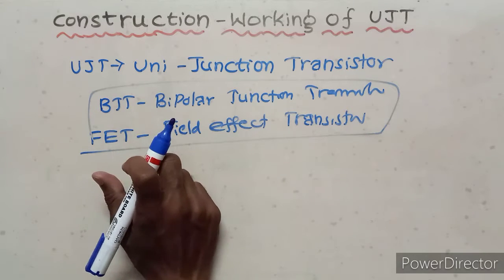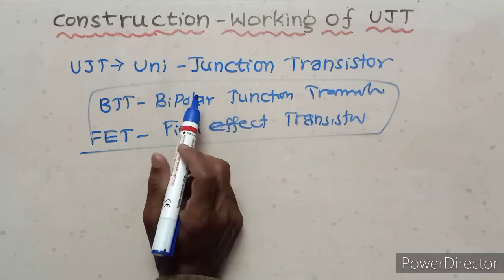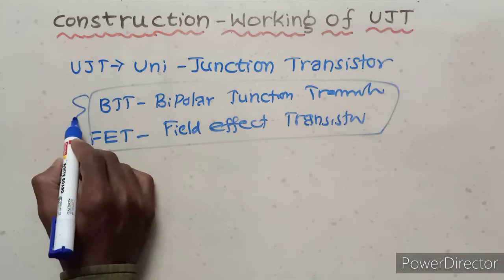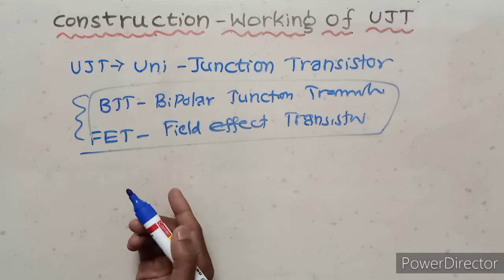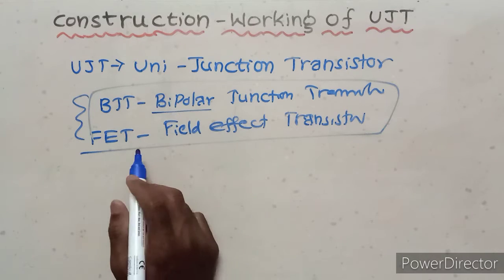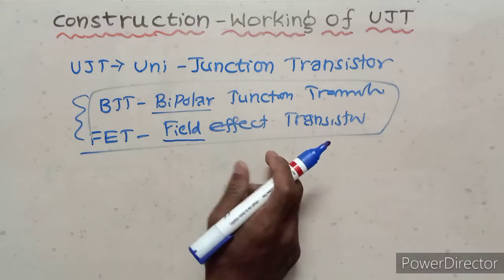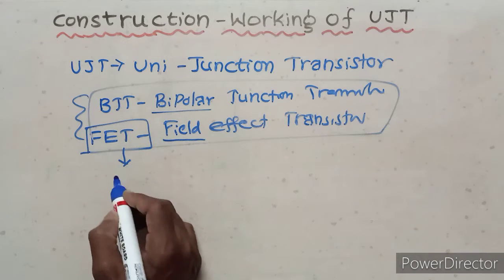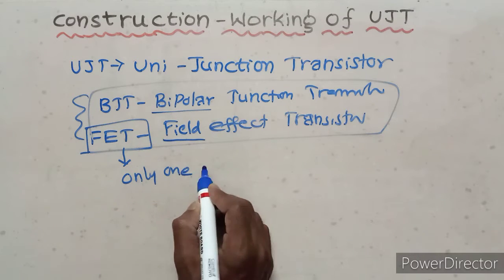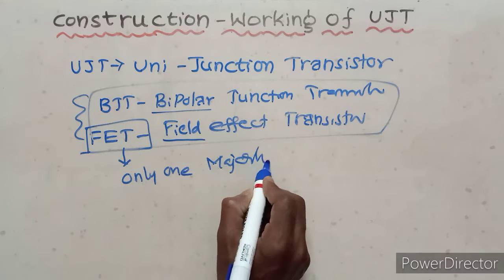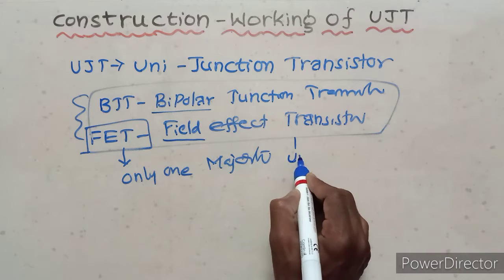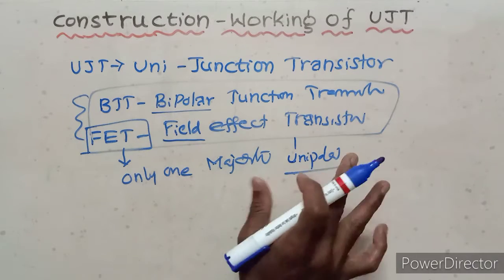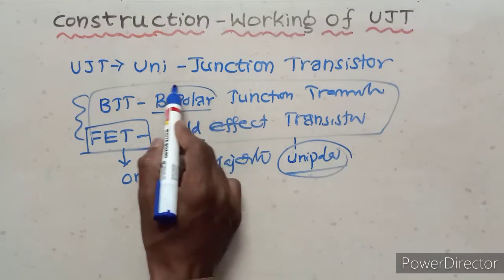Our present topic is the Uni Junction Transistor. In BJT there are two junctions — it is a bipolar junction transistor. In FET there is only one majority charge carrier, so FET is a unipolar field effect transistor. BJT is bipolar, FET is unipolar.